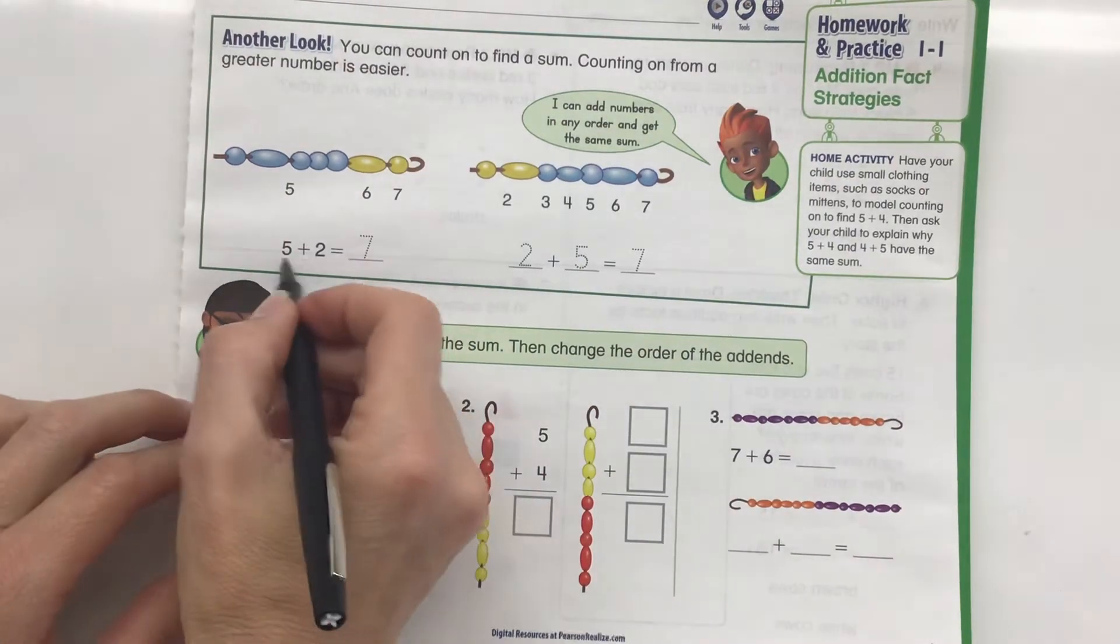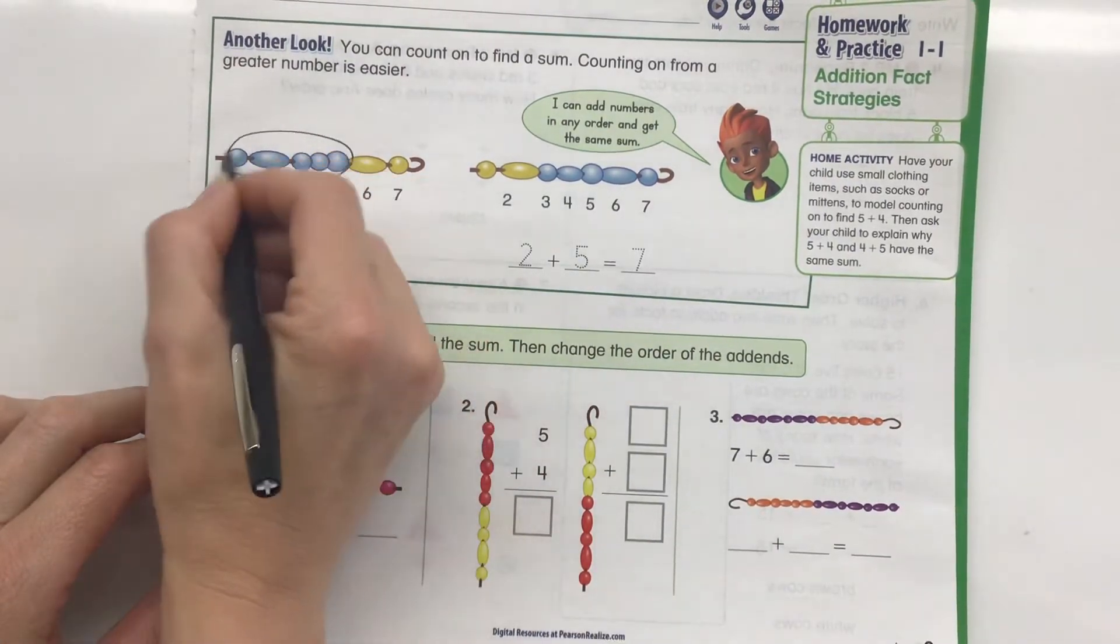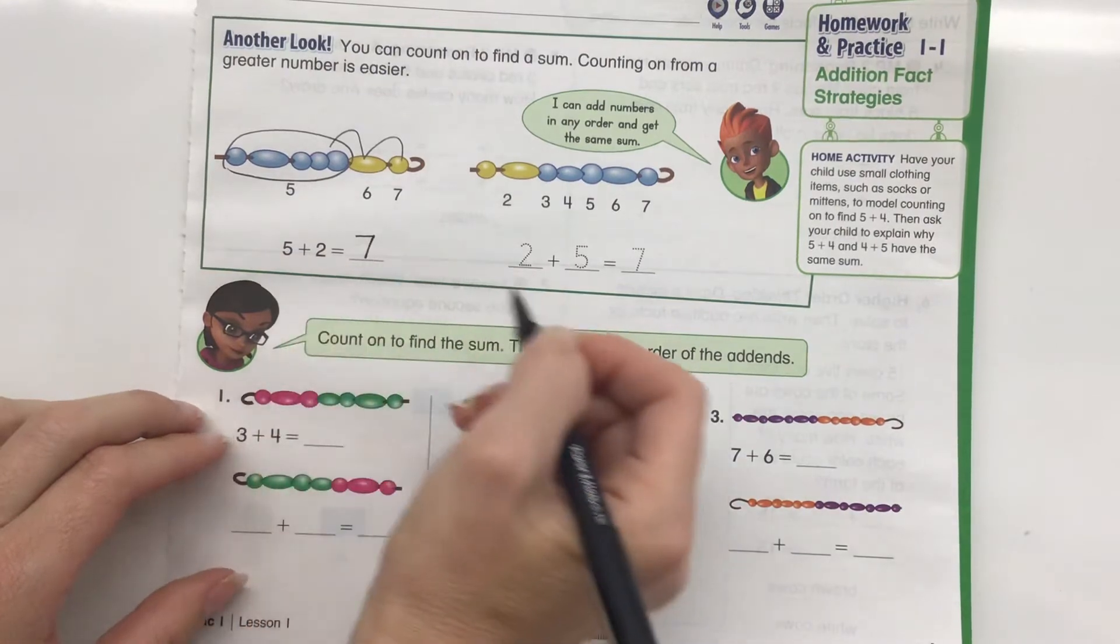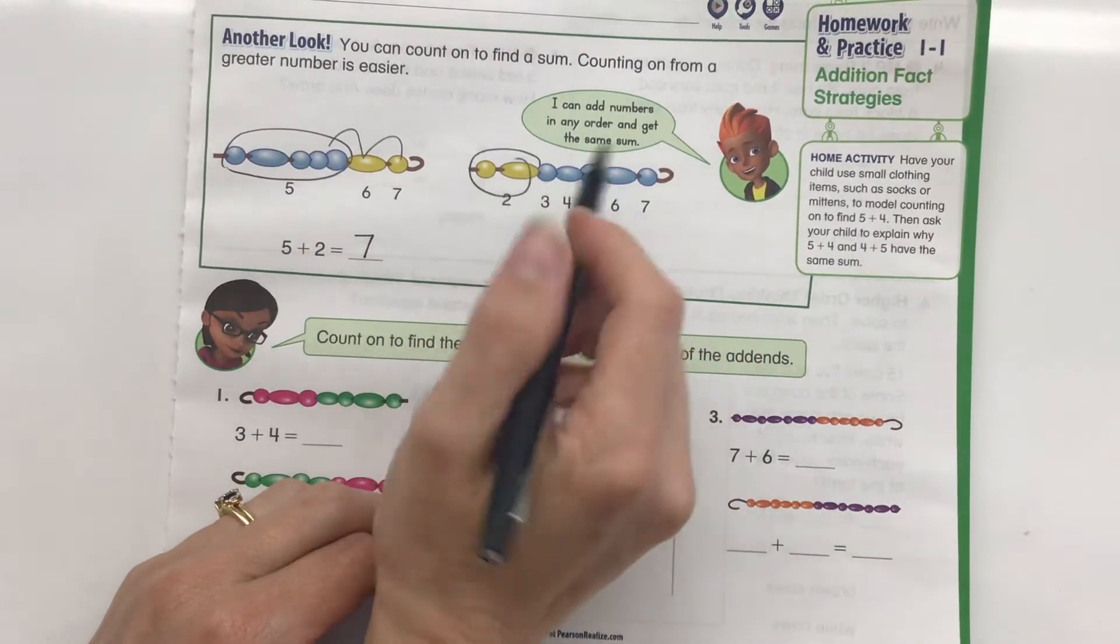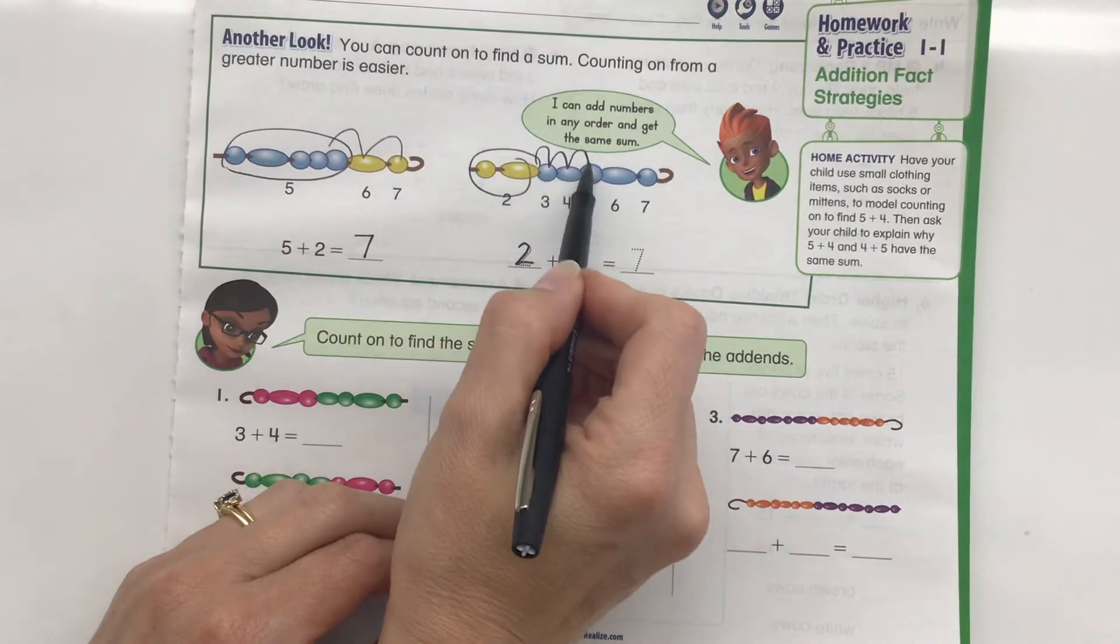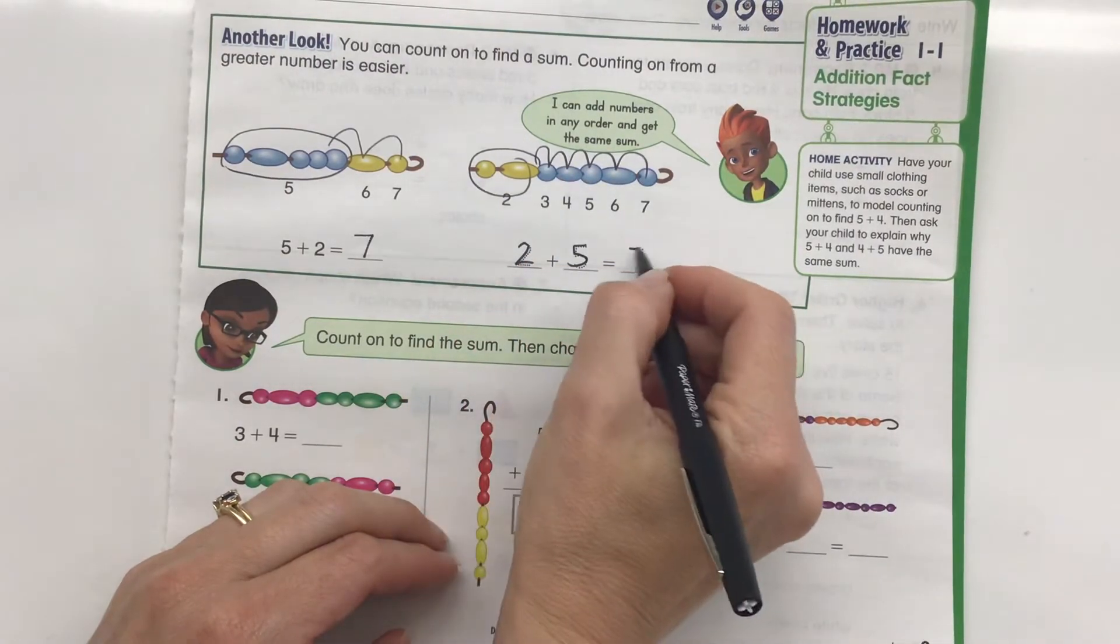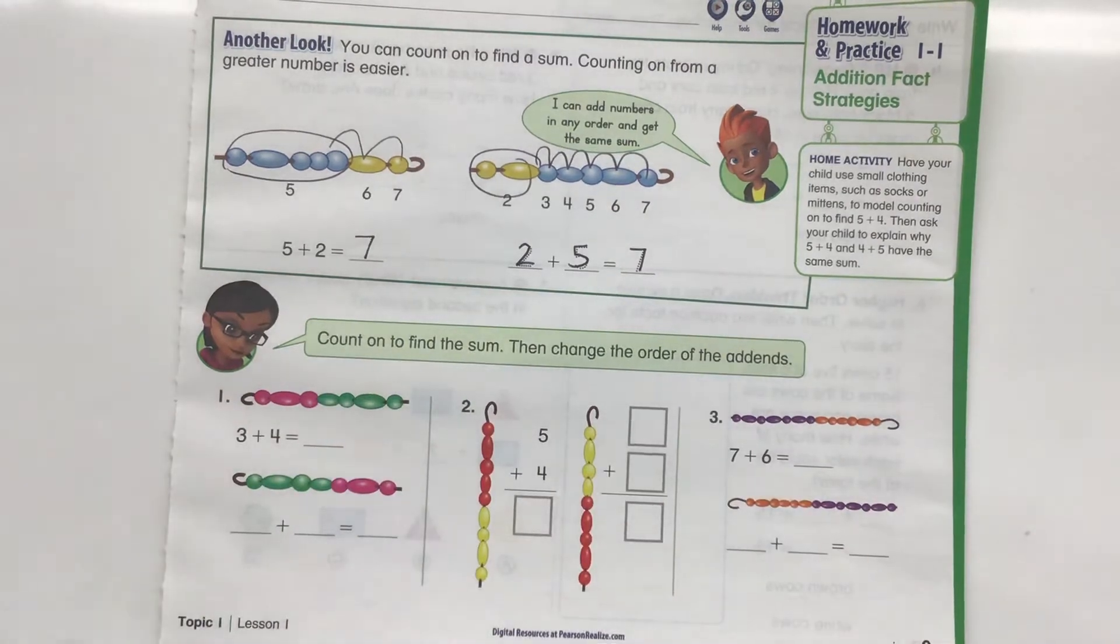Here we're doing 5 plus 2. So 5 plus 2, we see, is 7. If we start with a smaller number, which is fine, we just have more hops. We've got 1, 2, 3, 4, 5 hops to do. So it's better to start with a larger number.